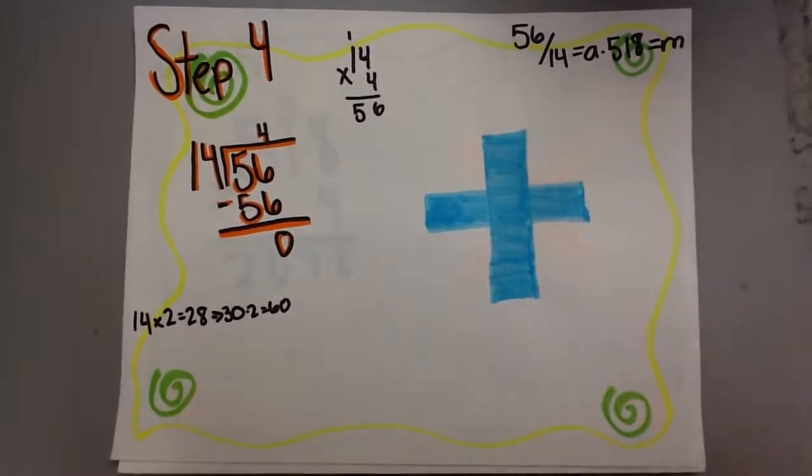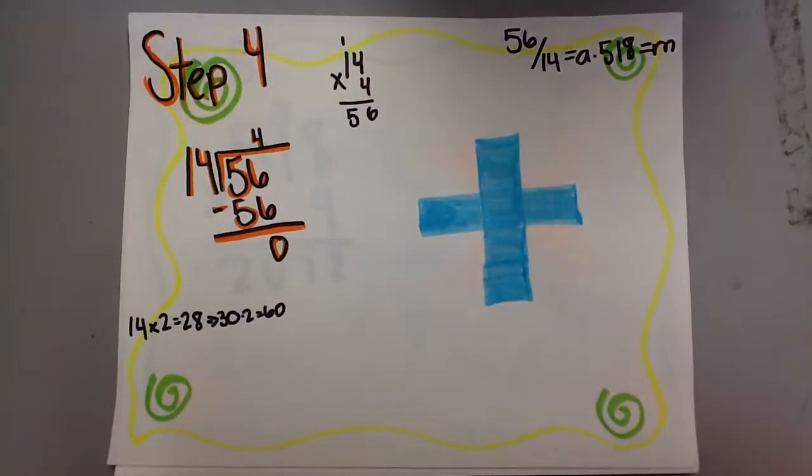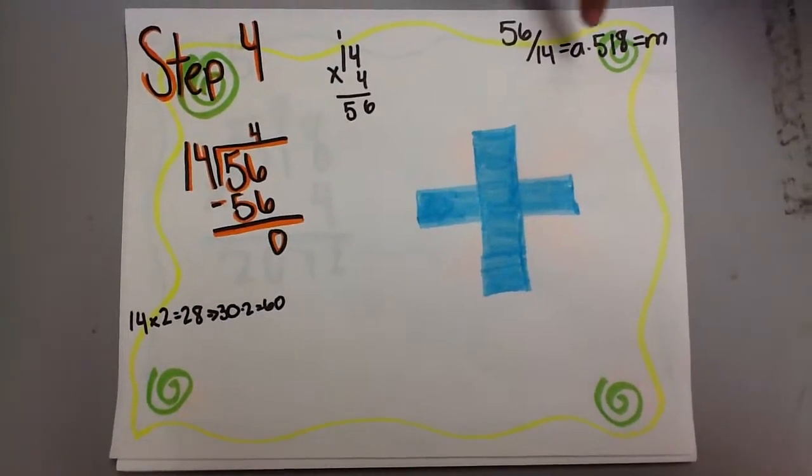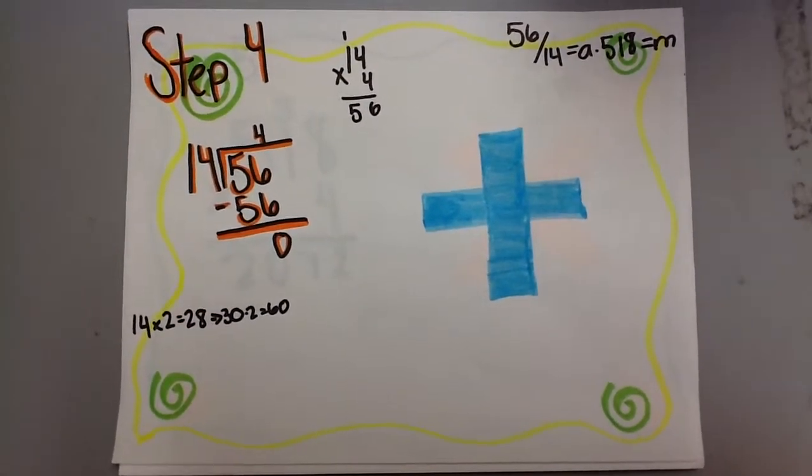As we can see, 14 times 4 equals 56. And if we remember the equation on how to solve the question, A equals 4.